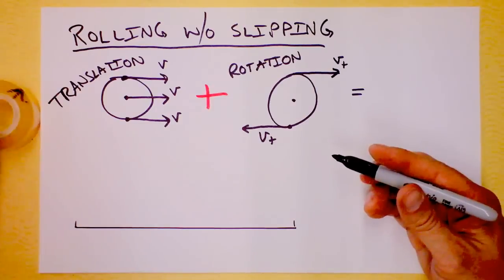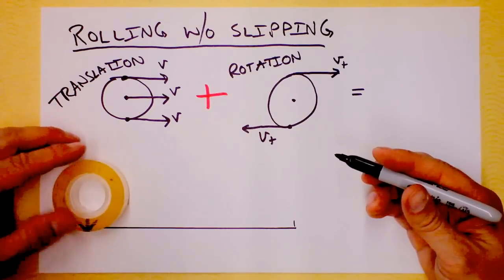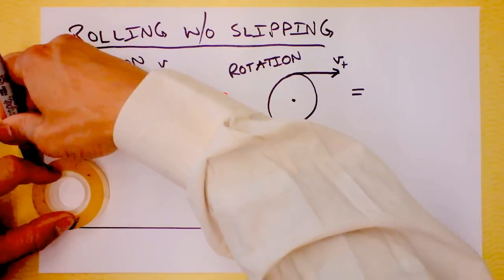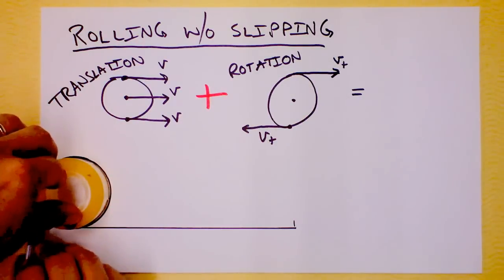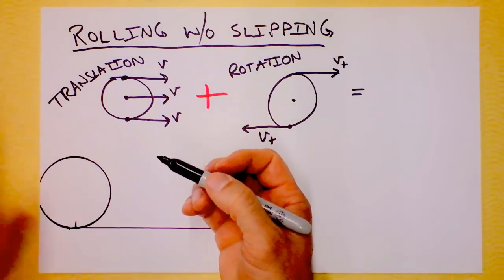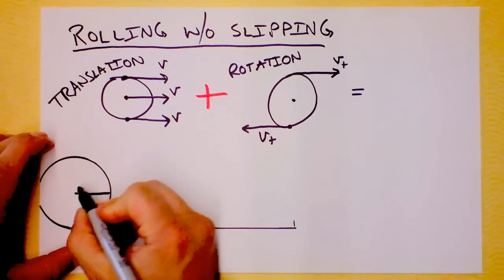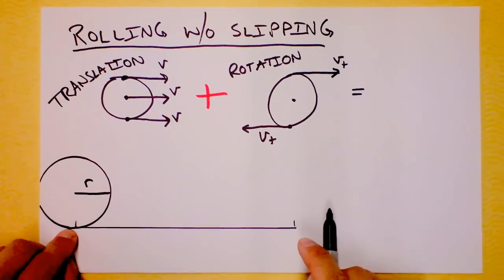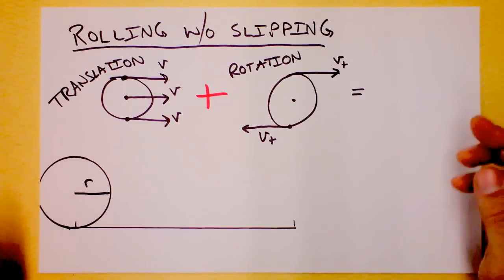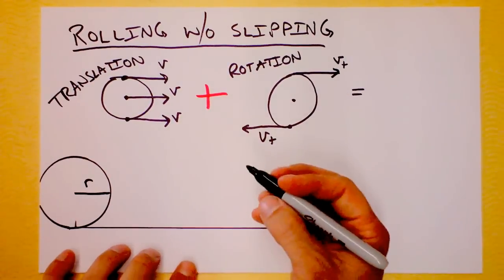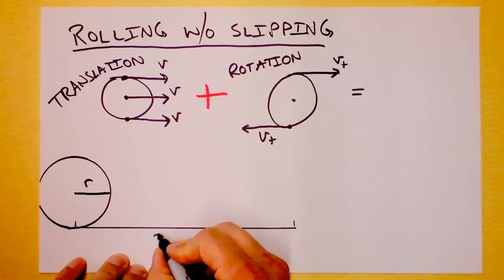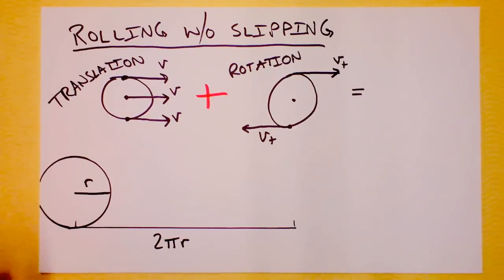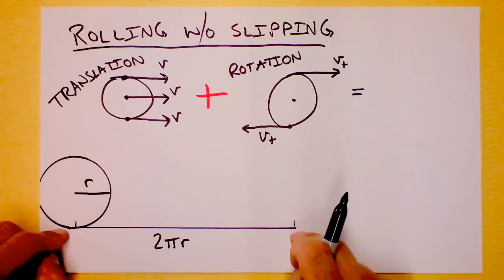And so if we draw the wheel like this, then we can identify its radius. And if it rolled this far, then we argue that it probably has rolled its circumference. So this distance is 2π times the radius of the circle if it rolled from here to here.